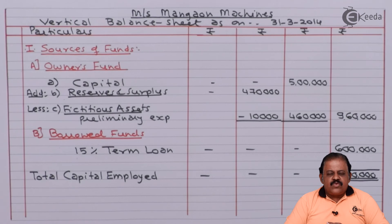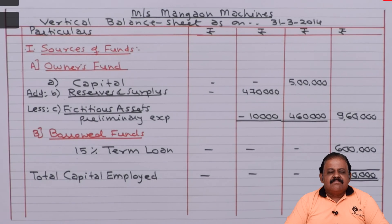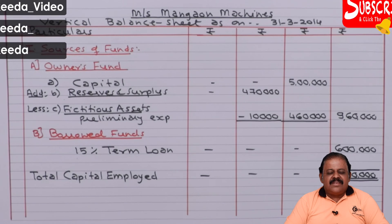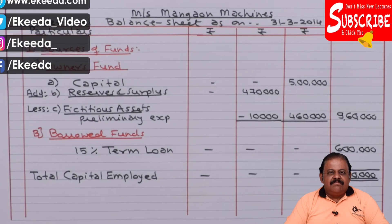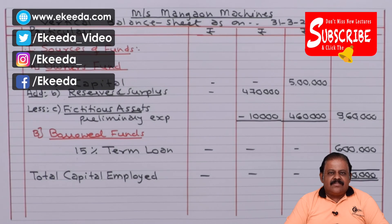In this question, we learned how to give effect to specific items like TDS on rent, capital work in progress, and others. Thanks for watching this video. Stay tuned with Ikeda and subscribe to our channel Ikeda. Thank you.